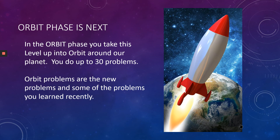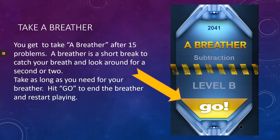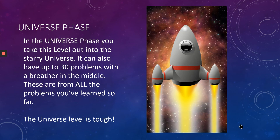The orbit phase comes next. In the orbit phase, you take this level up into orbit around our planet. You do up to 30 problems — orbit problems are the new problems you just learned and some of the problems you learned recently. After 15 problems in the orbit phase, you get to take a breather — a short break to catch your breath for a second or two. Take as long as you need, then hit go to end the breather and restart playing. The universe phase is next: you take this level out into the starry universe with up to 30 problems and a breather in the middle. These are from all the problems you've learned so far, so the universe level is tough.